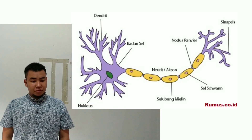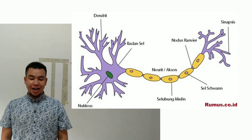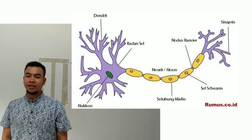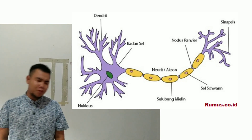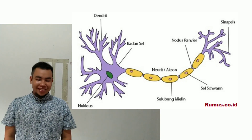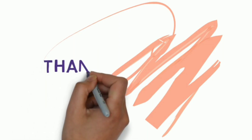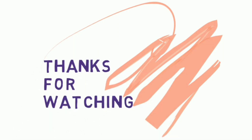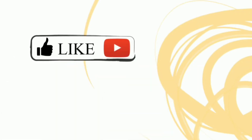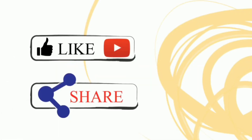Jaringan yang selanjutnya yaitu jaringan saraf. Jaringan saraf adalah jaringan yang membentuk sistem saraf. Jaringan saraf sangat peka akan keadaan sekitar, sehingga saraf mengendalikan otot gerak hewan setiap hari. Sekian materi dari saya, sampai jumpa di materi selanjutnya. Assalamualaikum warahmatullahi wabarakatuh. Terima kasih telah menonton!